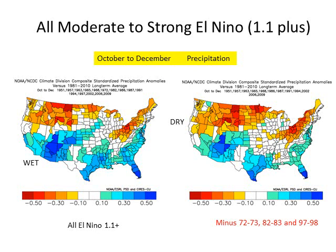Let's look at the El Niño years — all the moderate and strong ones — for the fall months or early winter, October through December. On the left-hand side with all years included, Southern California and especially the desert Southwest has a strong signal for wetter than normal. On the right, removing the big mega El Niños, the signal shrinks a little in California, but there's still definitely a signal for Southern California.